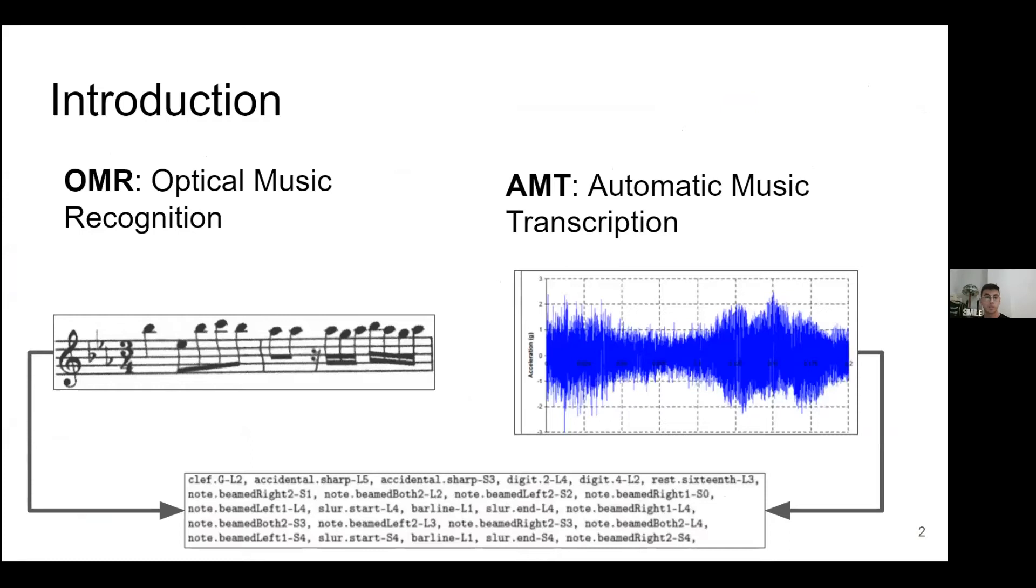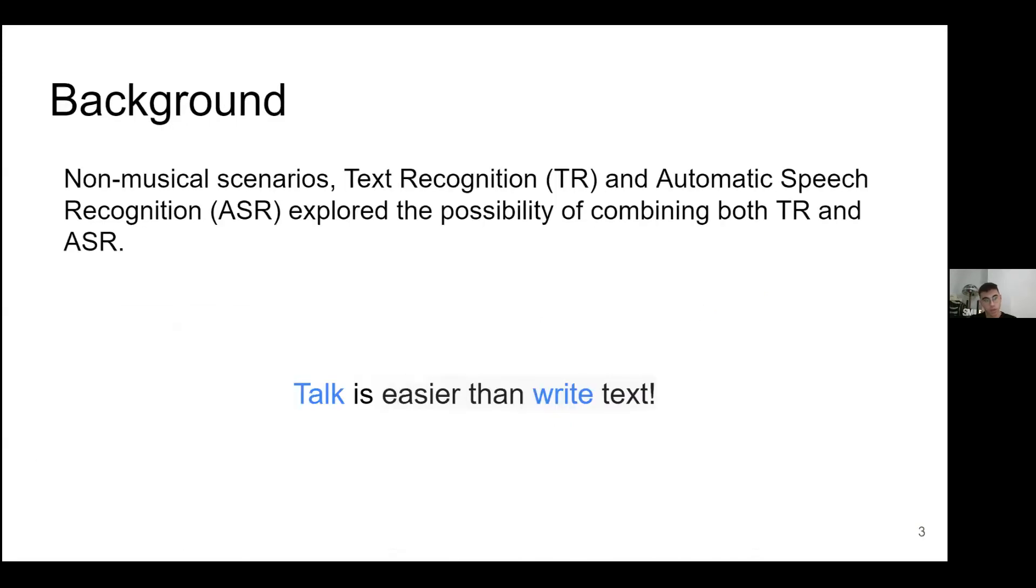The idea of this project is to validate the hypothesis that the multimodal combination of OMR and AMT works and improves unimodal results of both. OMR is Optical Music Recognition and AMT is Automatic Music Transcription. The objective of both is obtaining a structured digital representation - in the case of OMR from sheet music images, and in the case of AMT from acoustic recordings.